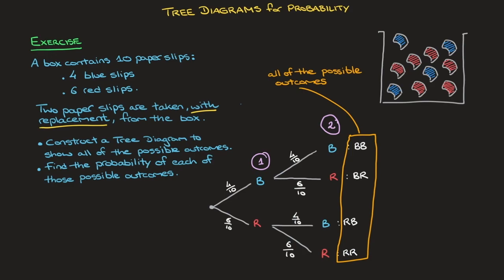Let's now learn how to calculate the probability of each of those possible outcomes, writing them right next to each outcome. The probability of picking a blue followed by a blue equals the product of the probabilities encountered along that path in the tree diagram. For blue followed by blue, those probabilities are 4 over 10 times 4 over 10, which equals 16 over 100, or 0.16.